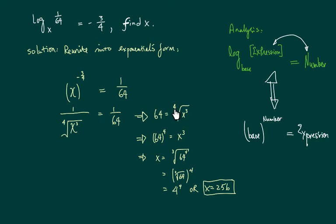Now I'm going to take the fourth root off by raising both sides to the fourth power, and x comes out. x is equal to the cubic root of 64 to the fourth.